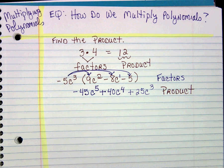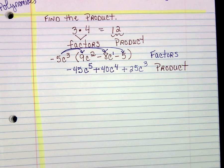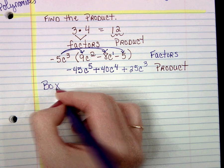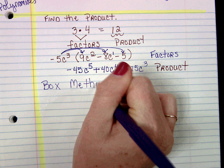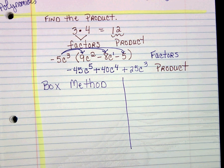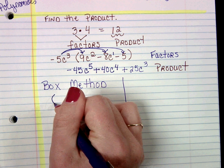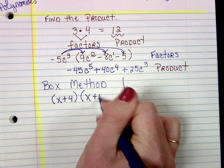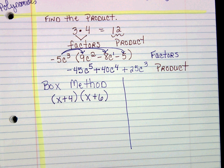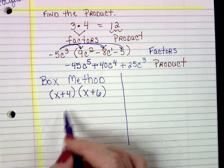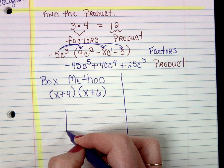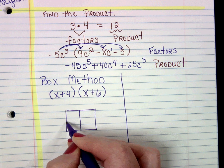For the next problem, I'm going to give you two different methods to use, because I know all of you have different learning styles. We're going to look at the same problem using two different methods. One method is called the box method. We're going to look at a binomial, x plus 4, times another binomial. If I'm going to use the box method, I'm going to draw a box that is 2 by 2, because there's two terms in each binomial.